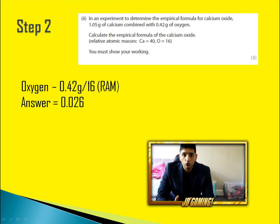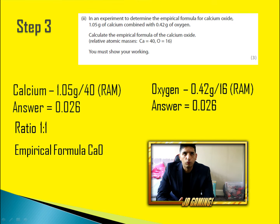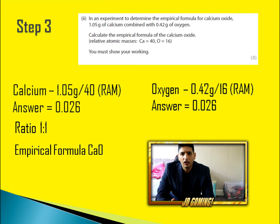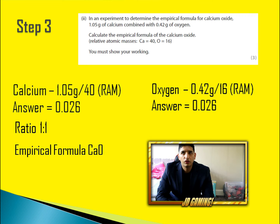Now the next step is to work out the ratios. The ratio is 1 to 1 because they're the same. Then the empirical formula is CaO — calcium oxide. The reason I'm not putting any numbers on is because when it's 1 you don't need to. If it's 2, then you do put a number on. That's a very quick three-mark answer in the exam.